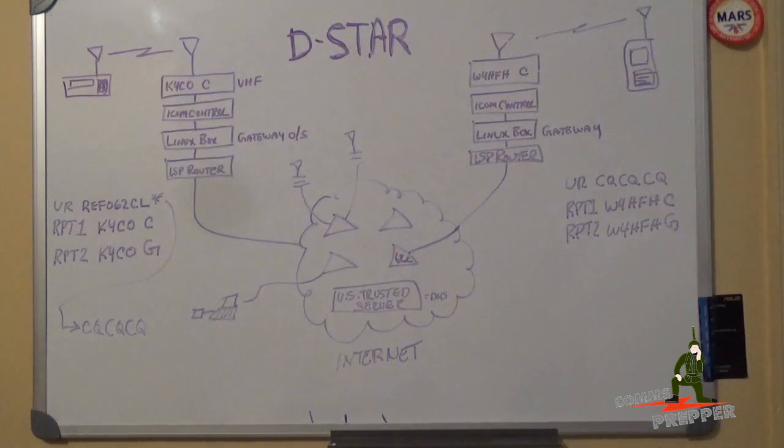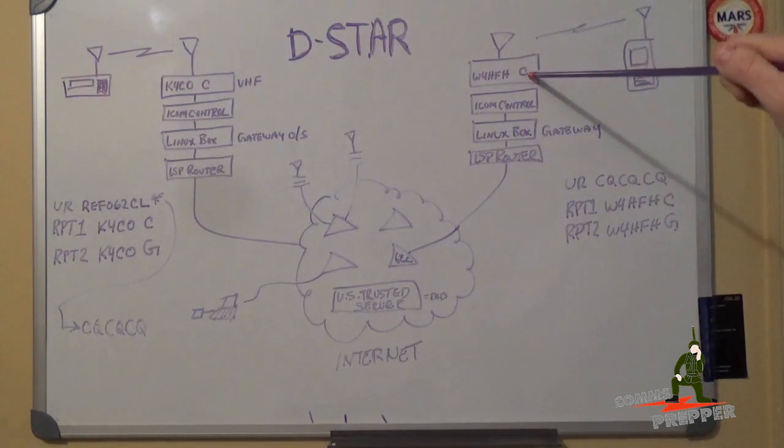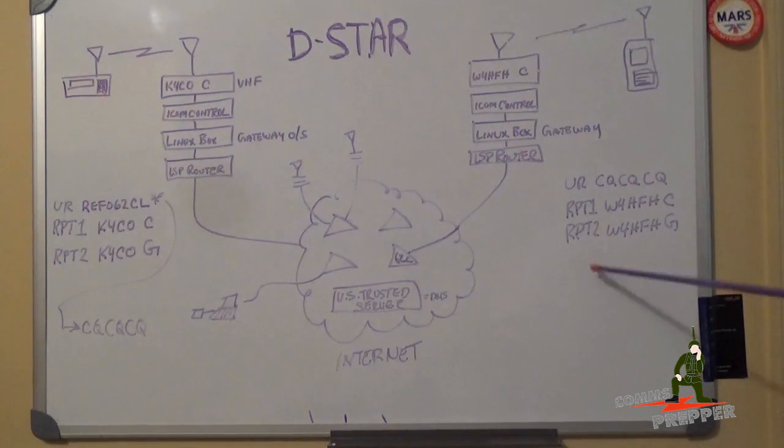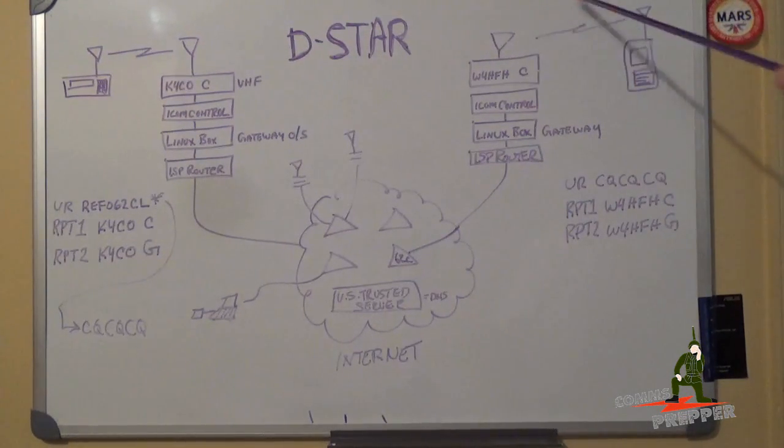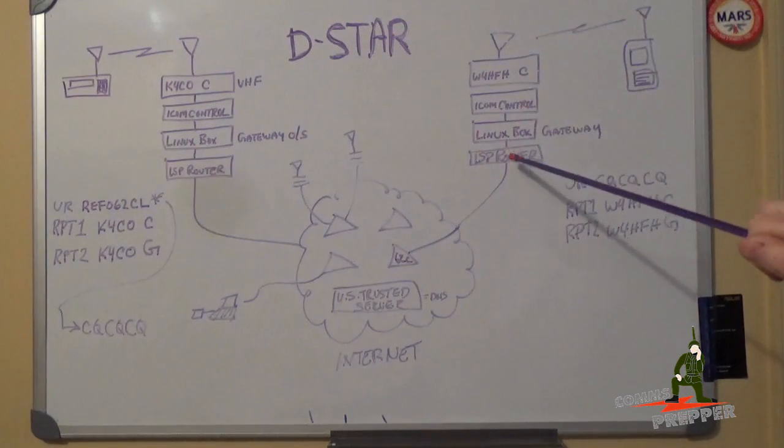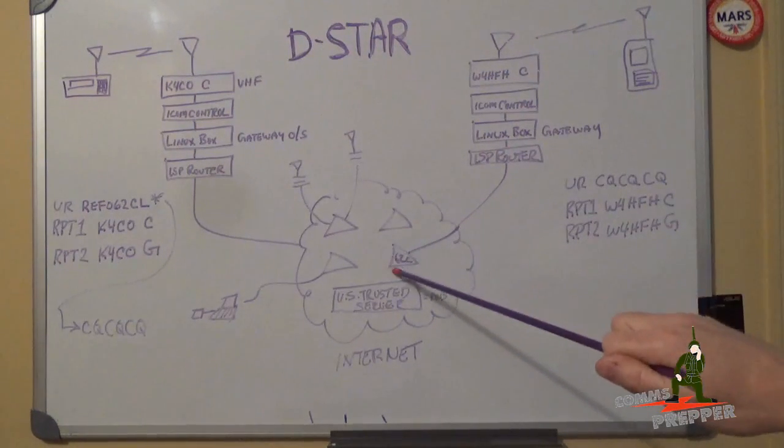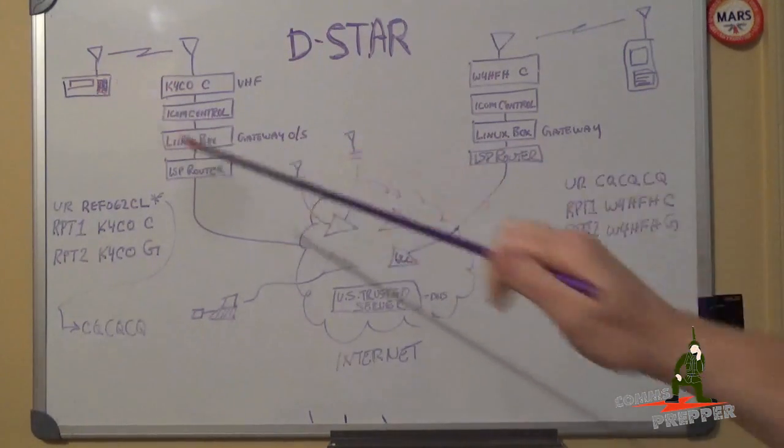I had to do the same routing in my radio, but since I was not establishing a link, my calling setting was set to CQ, CQ, CQ, any station. My on-ramp, RPT1, was W4HFHC, that port. And my off-ramp was RPT2, W4HFHG for the gateway, which told this system not only do I transmit out to other handhelds and mobiles in the area, but I should be routed out to the internet to the 62C reflector, which Brian was already connected to.